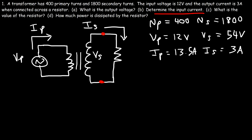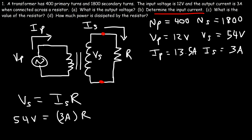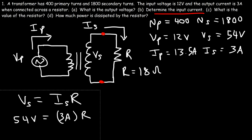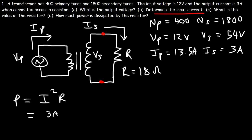Part c: what is the value of the resistor? Using V = IR with the secondary values: VS is 54 volts and IS is 3 amps, so R = 54 divided by 3 = 18 ohms. Part d: how much power is dissipated by the resistor? Using P = I²R: 3 squared is 9, and 9 times 18 equals 162 watts dissipated by the resistor.